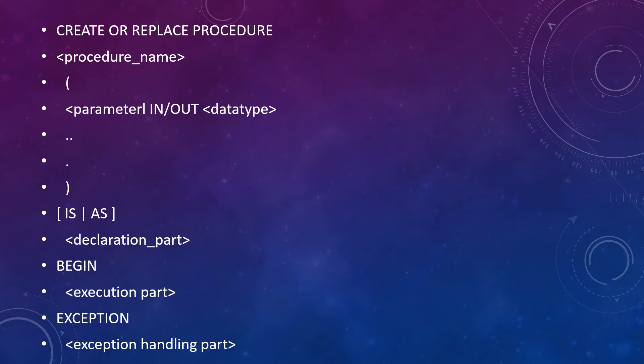After CREATE OR REPLACE, you write the procedure name followed by a list of parameters. Parameters are declared as IN, OUT, or IN-OUT. The procedure starts with AS. If the procedure is nested within another procedure, then you use IS; otherwise you write AS. Then comes the declaration part like any other PL/SQL block, then BEGIN and exception handling.